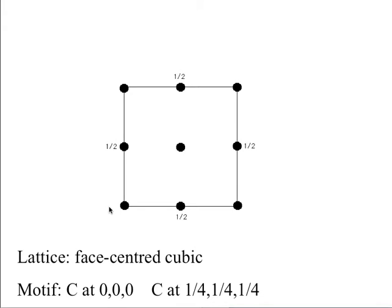Here is a more complicated structure. This is now a face-centred cubic lattice - imaginary points with lattice points at the corners of every cube and at the face centres. To generate the structure of diamond we place a carbon atom at 0,0,0 and another at 1/4,1/4,1/4 on every one of those lattice points.